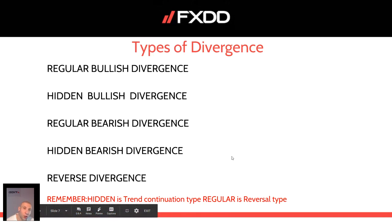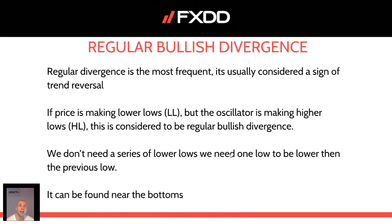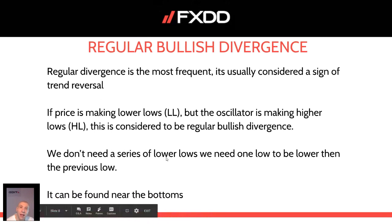Regular bullish divergence is the most frequent and is usually considered a sign of trend reversal. If the price is making lower lows but the oscillator is making higher lows, this is considered to be regular bullish divergence. We don't need a series of lower lows — we need just one low to be lower than the previous low. You don't need to see a series of lows; it's only one low before you spot a divergence, and it's usually found near the bottoms.